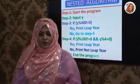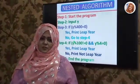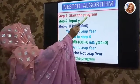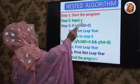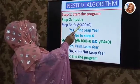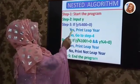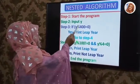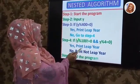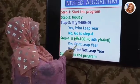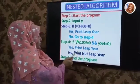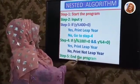This is the nested algorithm. Nested means checking the condition separately. Step 1 — start the program. Step 2 — input Y, where Y is year. Step 3 — if Y mod 400 equals 0, yes: print leap year. If false, go to Step 4 — if the condition is true, print leap year; if false, print not leap year. Step 5 — end the program.